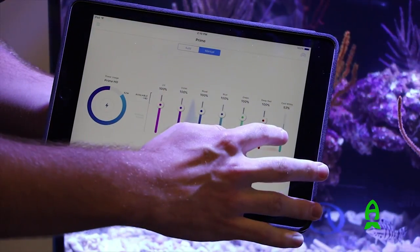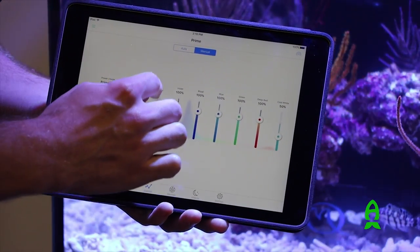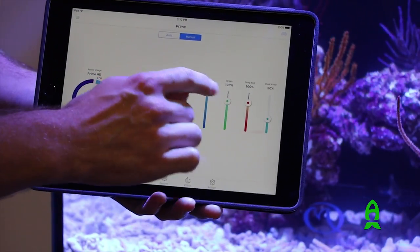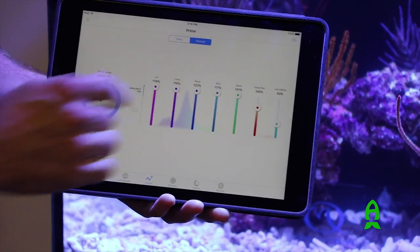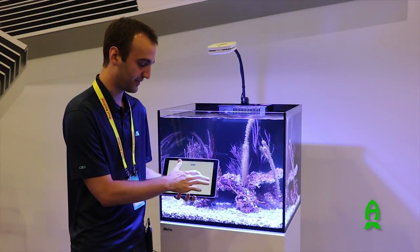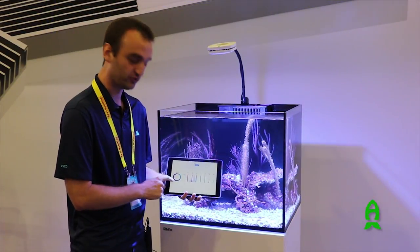So for instance, if I wanted to bring down the white here, I'm not using that full 48 watts. As you can see, I'm only using 41 watts. So instead, I can bring up, say, the blue so that I can customize that spectrum and still use the 48 watts here.